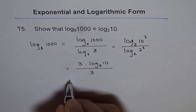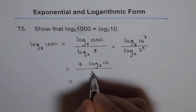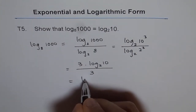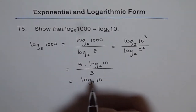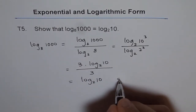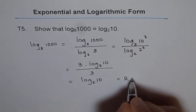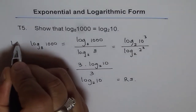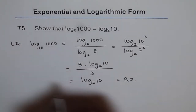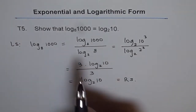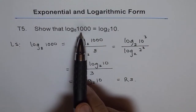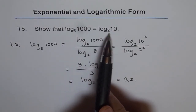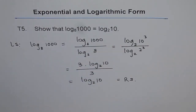And this is equal to — the 3 and 3 will cancel out, and we get log to the base 2 of 10. And that is the right side. So we started with the left side and we proved the right side: log to the base 8 of 1000 is equal to log to the base 2 of 10. Thank you.